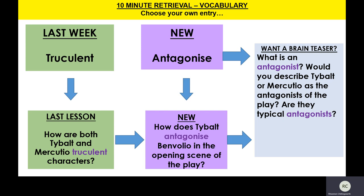Mercutio himself is a very truculent character as well — he's almost just as bad as Tybalt. He's always trying to wind people up and antagonise them, and he's always looking for an excuse for a fight. So it's no surprise that when Tybalt and Mercutio meet in Act 3, Scene 1, which we're going to be looking at next lesson, they end up having this big fight.